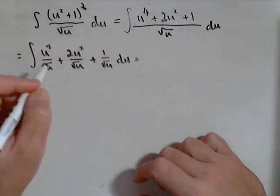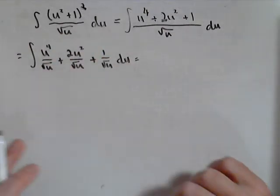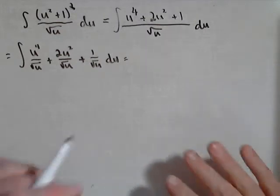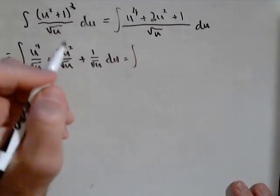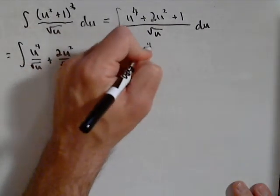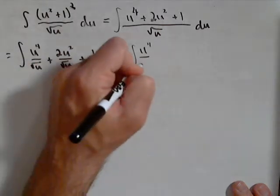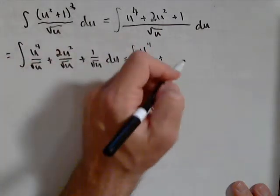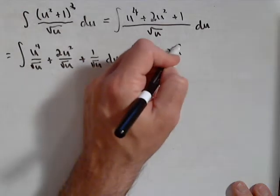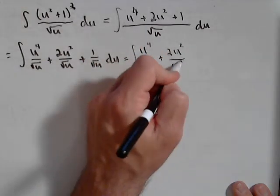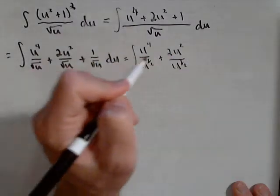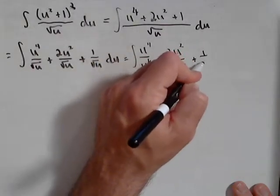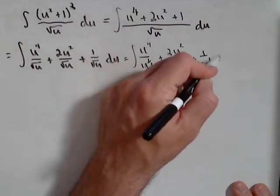And let's change those all to u to the one half so we can apply some properties of exponents here. So we have the anti-derivative of u to the fourth over u to the one half plus two u squared over u to the one half plus one over u to the one half, du.